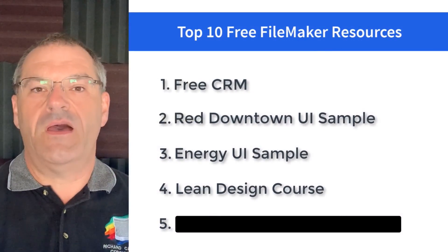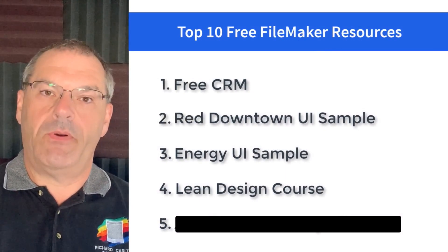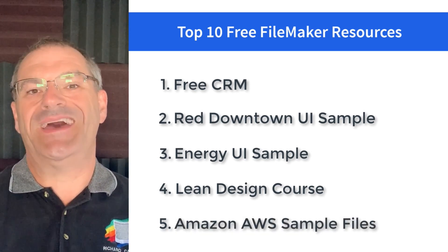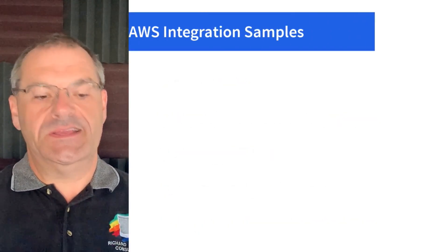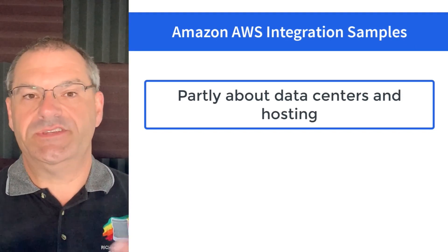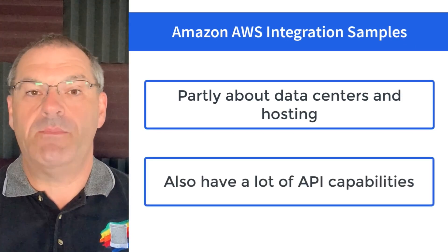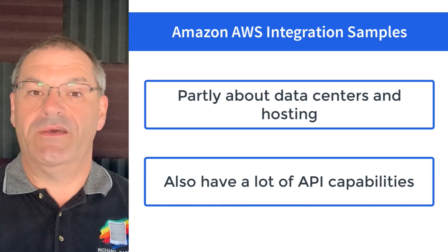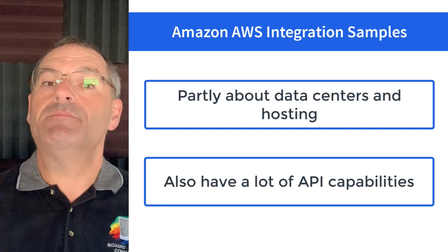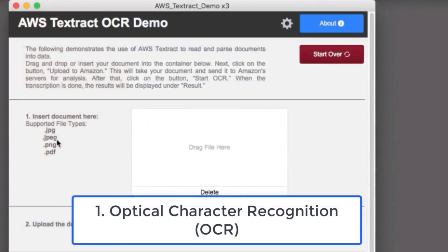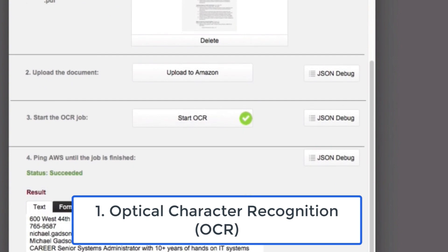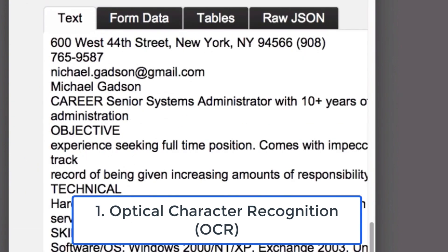Number five on our list are three sample files that demonstrate how to connect to Amazon AWS's data centers. Amazon AWS has a lot of API capabilities, meaning you can tell an Amazon service to do something for you and get the results back. Number one on this list is OCR — we created an OCR application that you can unlock and play with, and it actually has a free capability for limited demos. You take a scanned document, send it to Amazon, and back comes the text in a text field. Really cool.